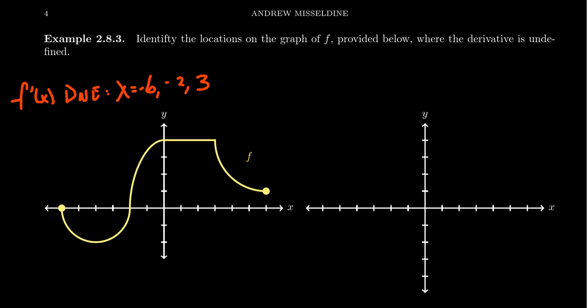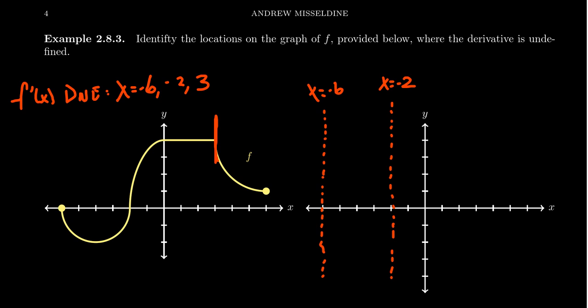When you have a vertical tangent line on the function, that corresponds to a vertical asymptote on the derivative. So at x equals negative 6, you're going to get a vertical asymptote on the derivative graph. There was also one at x equals negative 2. At x equals 3, if you approach from the right there is a vertical tangent line, and there's a horizontal tangent line from the left — this is the reason why sharp corners are a problem. The left approach will disagree from the right approach, so there's going to be a vertical asymptote on the derivative at x equals 3 as well.